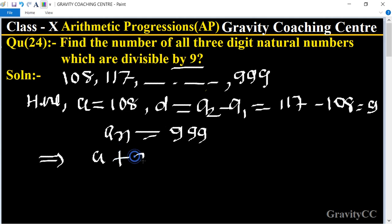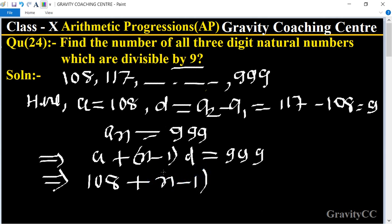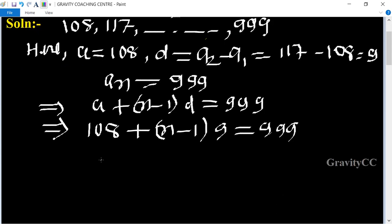This implies that 108 plus (n minus 1) times 9 equals 999. Substituting, we get 108 plus 9n minus 9 equals 999.